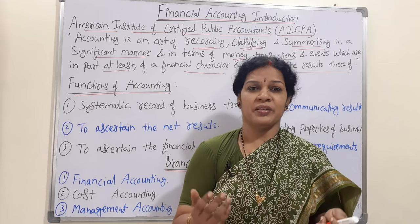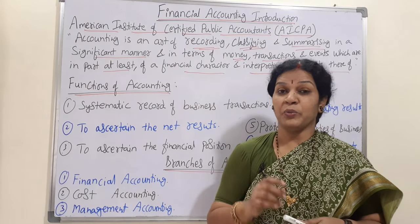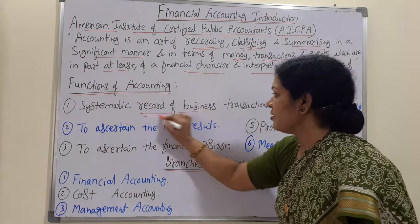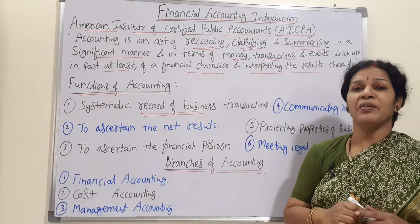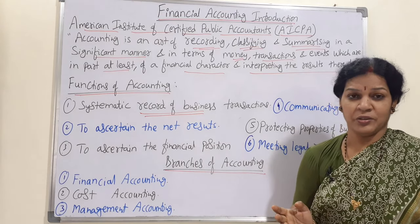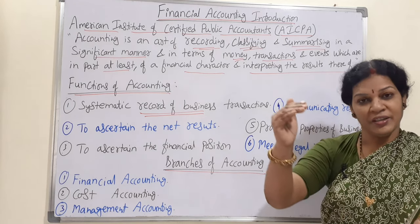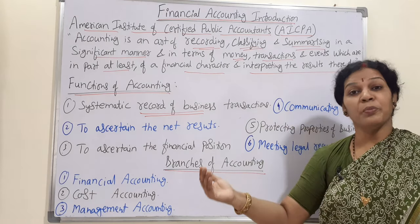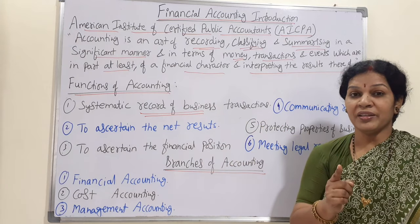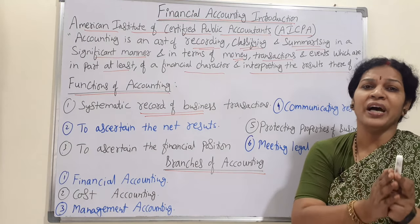Now let's see the functions of financial accounting — why do we prepare it? The main function is systematic record of business transactions. We have to record all business transactions in a systematic, chronological order. Suppose today we have 30 transactions — one by one we record them, and similarly day after day we record all transactions in a systematic way.